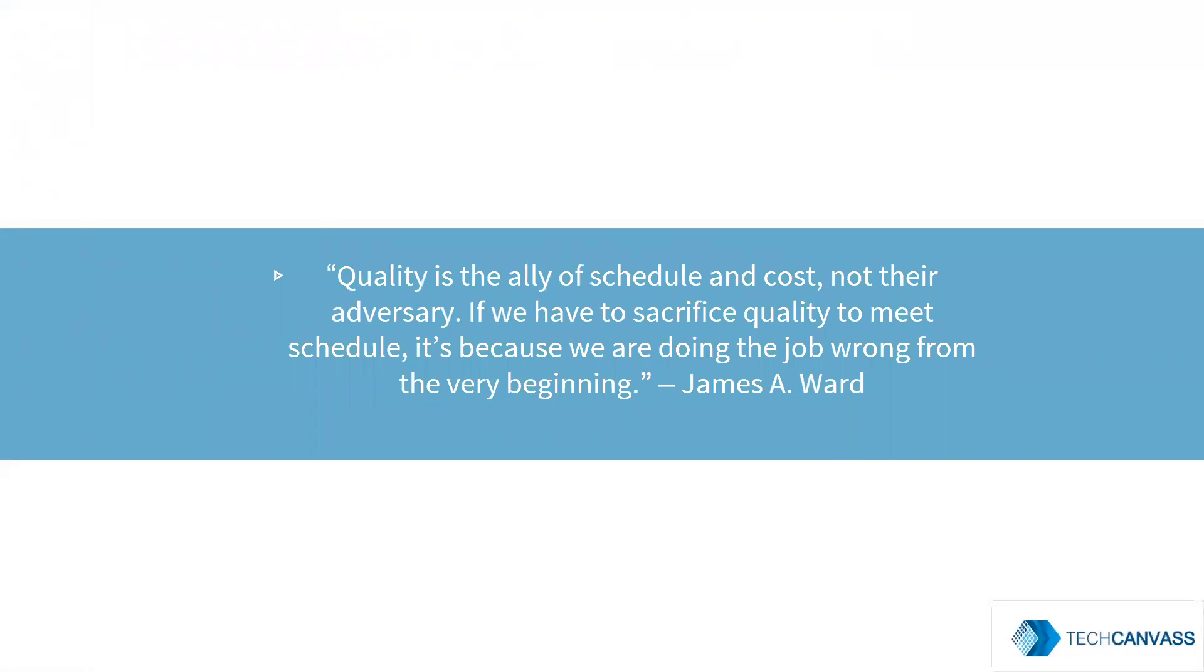Quality is the ally of schedule and cost, not their adversary. If we have to sacrifice quality to meet schedule, it's because we are doing the job wrong from the very beginning. In short, a combination of automation and manual testing works great together. Both have their own pros and cons. Agile and automation testing go hand in hand. Business leaders need to take decision whether to go for automation testing or to continue with manual testing.